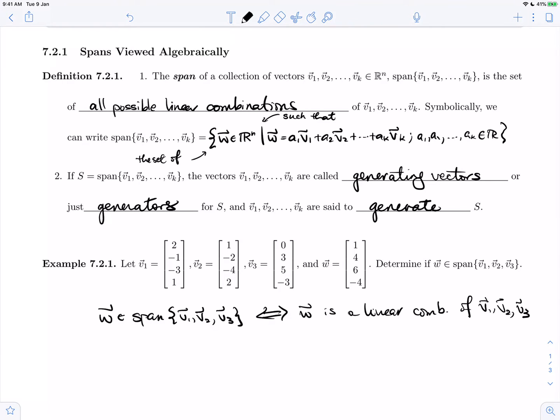What does that mean? We have to remember from our previous video that w is a linear combination if and only if there are constants, coefficients a1, a2, and a3, scalars in R, such that w = a1*v1 + a2*v2 + a3*v3.